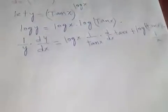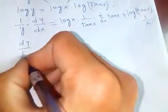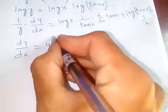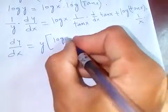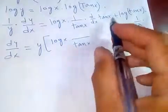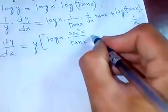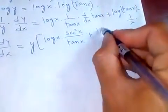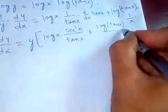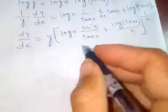Now dy by dx is equal to, everything you transfer here, y times log x into tan x. Now derivative of tan x is sec squared x, plus log tan x over x.